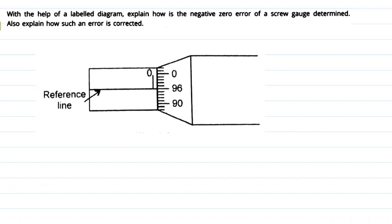Hello everyone, hope you are doing well. I'm going to explain this question in this video. The question says: with the help of a labeled diagram, explain how is the negative zero error of a screw gauge determined, and also explain how such an error is corrected. We need to define what negative zero error is for a screw gauge and explain how we can correct that error.